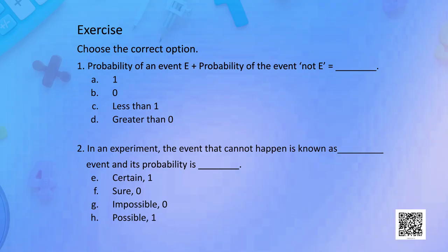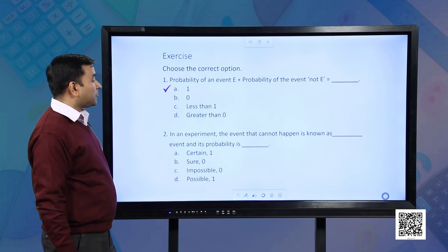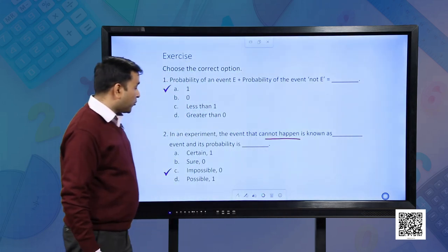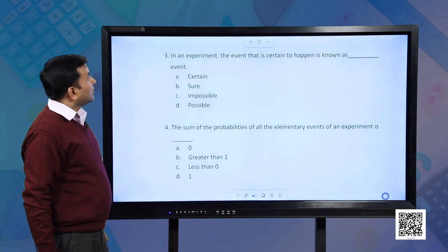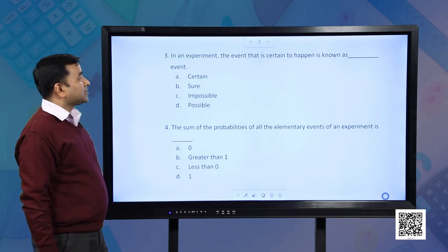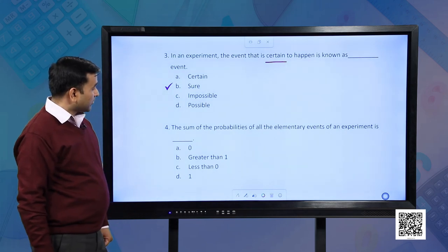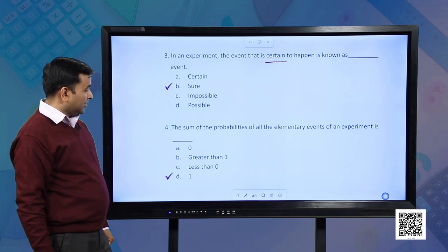Now let us do an exercise. Question 1: Probability of an event E plus probability of event not E is equal to — yes, it is 1. Question 2: In an experiment, the event that cannot happen is known as an impossible event and its probability is 0. Question 3: In an experiment, the event that is certain to happen is known as a sure event — certain and sure are synonyms. Question 4: The sum of probabilities of all elementary events of an experiment is 1.